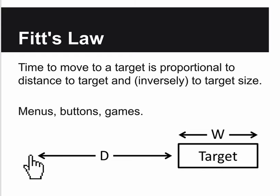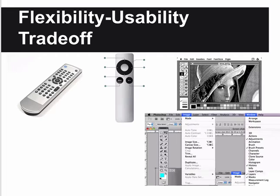Fitts's law tells us that the time to move to a target is proportional to the distance to the target and inversely proportional to the target size. In a web application, if the button is big you can hit it easily, but if the button is small it's harder to hit. This becomes important when doing menus - put things that are used often either big or close.